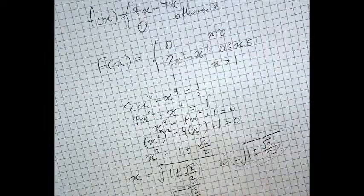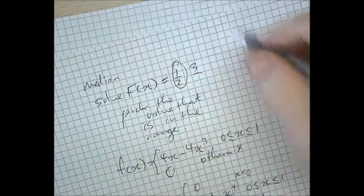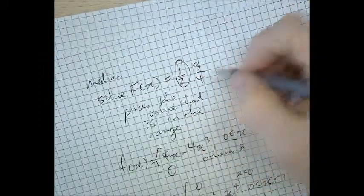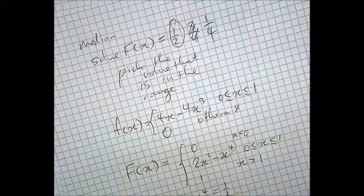Now, if you want to solve for quartiles, don't use a half. If you want the upper quartile, solve for F, capital FX equals 3 quarters. If you want the lower quartile, solve for capital FX equals 1 quarter.